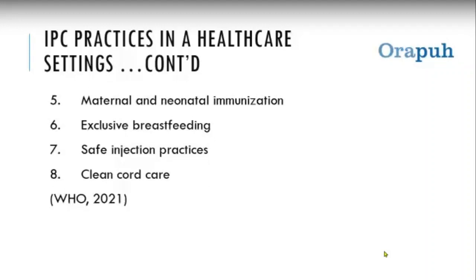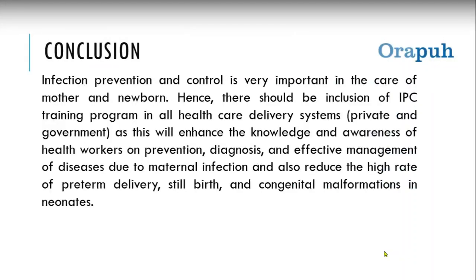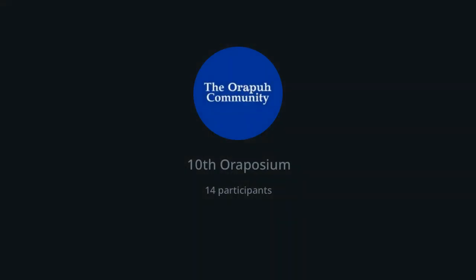Safe injection practices: whenever you use an injection needle, do not reuse it. Dispose of it carefully as required, because if littered, it may prick someone, and if the needle was used on an infected person, you can transfer infection to another. Cord care: mothers must be taught how to care for their baby's cord, as the cord serves as an opening through which infection can enter the child's body. They should wash their hands before cleaning the cord and clean it every three hours to prevent infection.